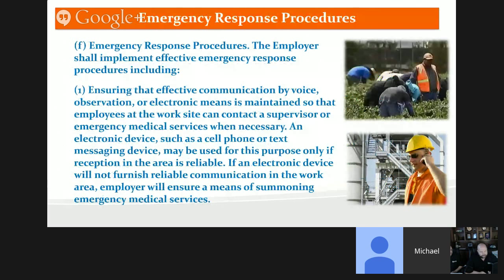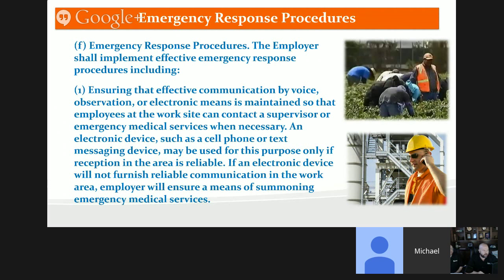For emergency response procedures, effective communication must be maintained by voice, observation, or electronic means so employees can contact a supervisor or emergency medical services when necessary. A phone or cellular device works as long as you have reliable communication in the area. You need to ensure all employees are trained on what those emergency procedures are and know how to execute them, including having people other than the supervisor who can act if necessary.